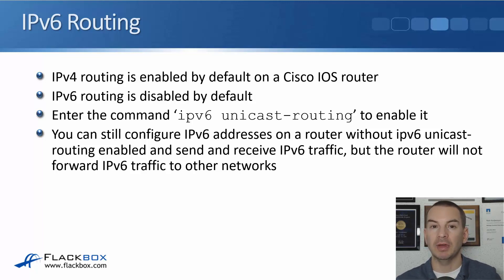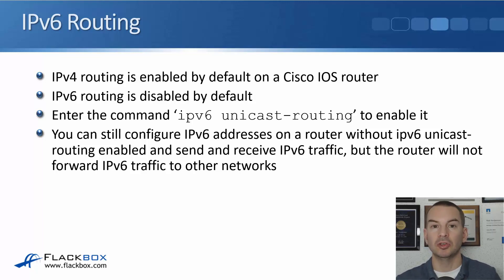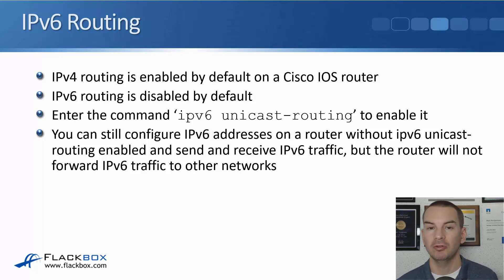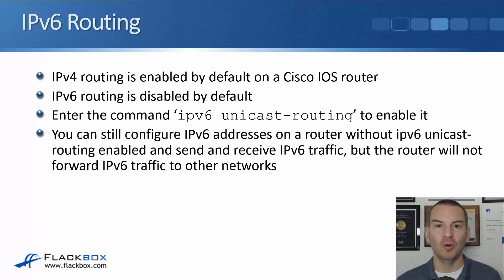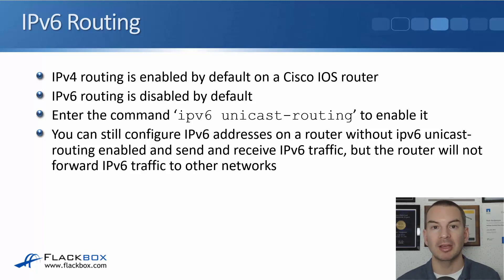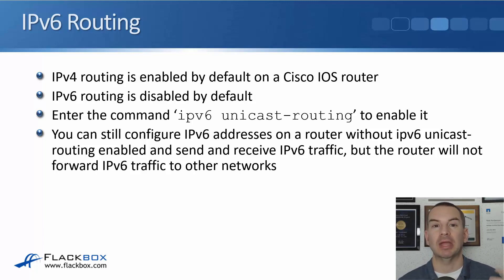If you forget to put that command on, you can still configure IPv6 addresses on the router's interfaces and it will be able to communicate with hosts on those same subnets. But if a host tries to send IPv6 traffic through the router, the router won't forward it. The host will be able to ping the router and the router might be able to ping whatever is on the other side, but without IPv6 unicast routing enabled, the router will not forward the traffic. So whenever you're configuring IPv6 on a router, that should be the first command you put in.